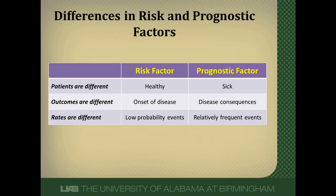This table tries to differentiate risk factors from prognostic factors. First, the patient populations are very different: risk factors deal with healthy patients, whereas prognostic factors deal with sick patients. The outcomes are also different: risk factors are associated with development or onset of disease, whereas prognostic factors are associated with development of disease consequences. Risk factors tend to predict low probability events — even though some diseases are common, when you look at the whole population they're fairly rare. But prognostic factors deal with relatively frequent events, since once you have a disease you're going to have some outcome from it, even if that outcome is simple recovery.